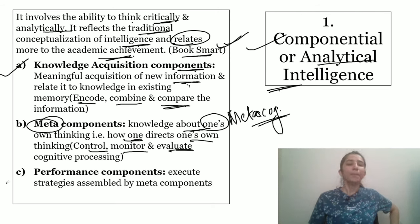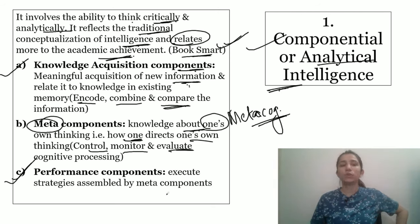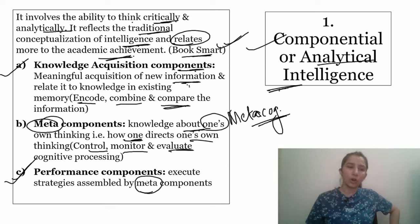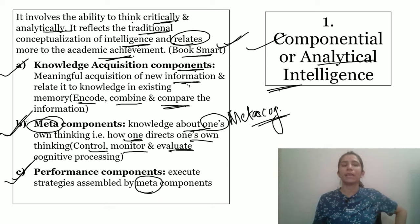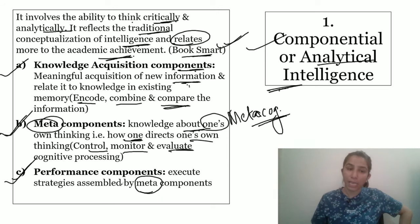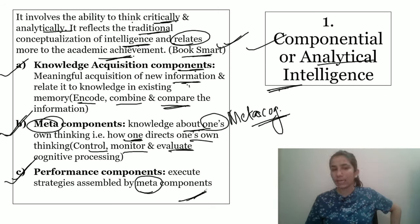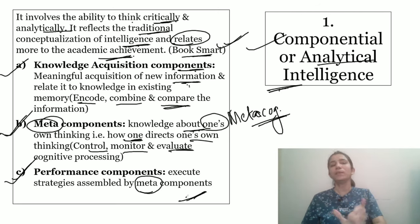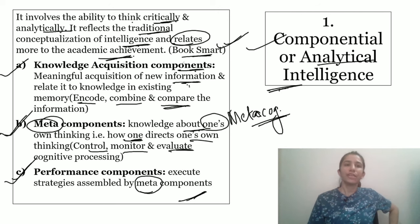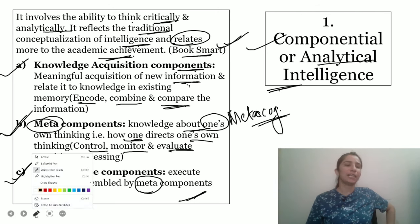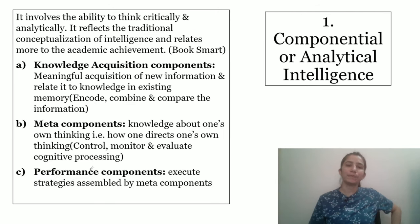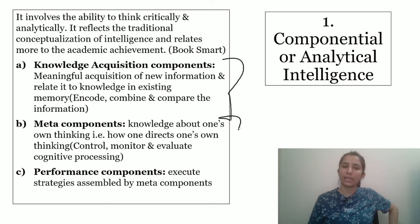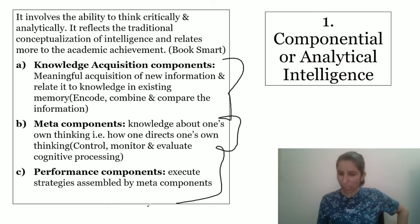The third is the Performance Component — execute strategies assembled by meta-components. Here you have to think about strategies and then apply or implement them. So this is our Performance Component. These are the three components of Componential and Analytical Intelligence. You have to remember the names and understand this concept.